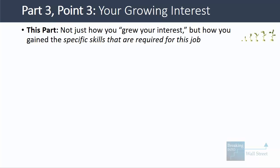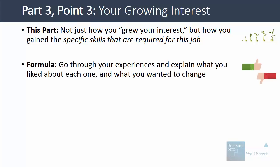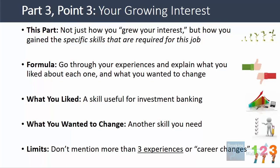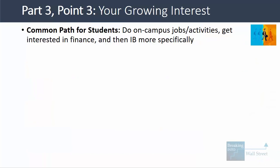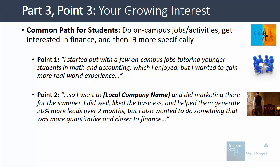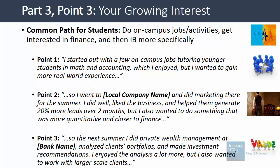Your growing interest is not just about how your interest grew over time, but how you gained specific skills required for this job. You should go through each of your main experiences and talk about what you liked about each one and what you wanted to change — and both of these should be skills required for banking or whatever role you're applying for. Don't mention more than three experiences or career changes or it'll be too long. If you're a student, an example might be: you started out doing on-campus tutoring for math and accounting, but wanted more real-world experience. So you did marketing at a local company, worked with clients, helped generate 20% more leads, but wanted something more quantitative and closer to finance. So you did private wealth management, analyzed clients' portfolios, and made investment recommendations.